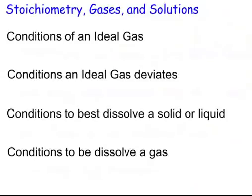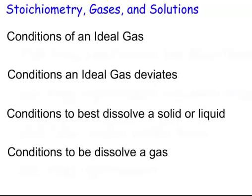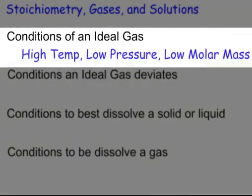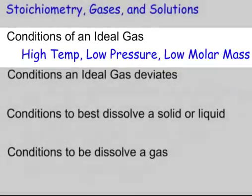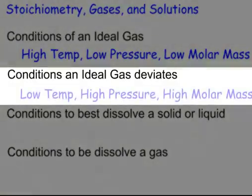If we have conditions for an ideal gas, what would the conditions be for an ideal gas? That would be high temperature, low pressure, low molar mass. That's what gases like to be at. Therefore, where would an ideal gas deviate would be low temperature, high pressure, high molar mass.